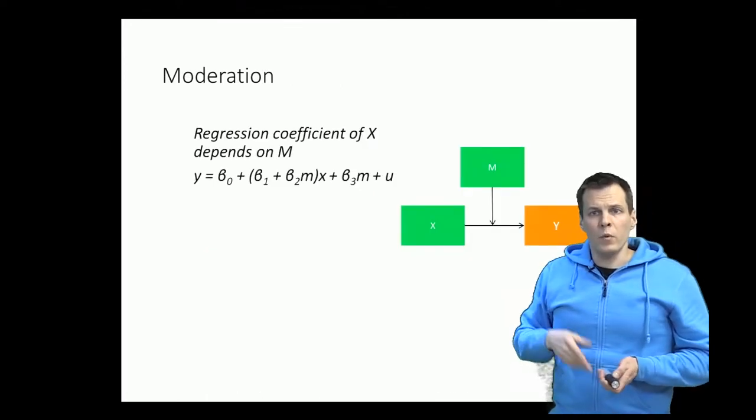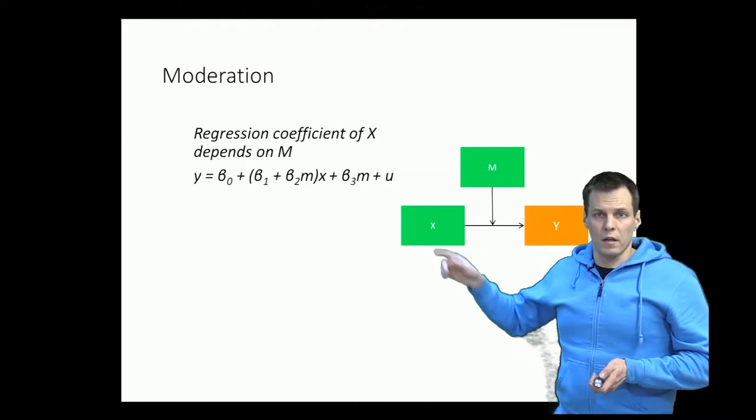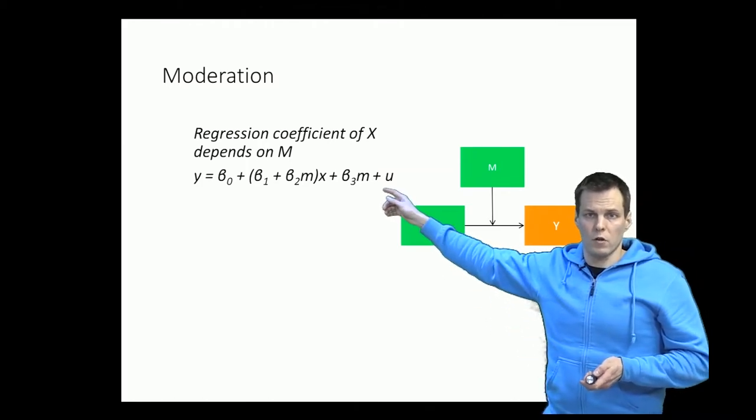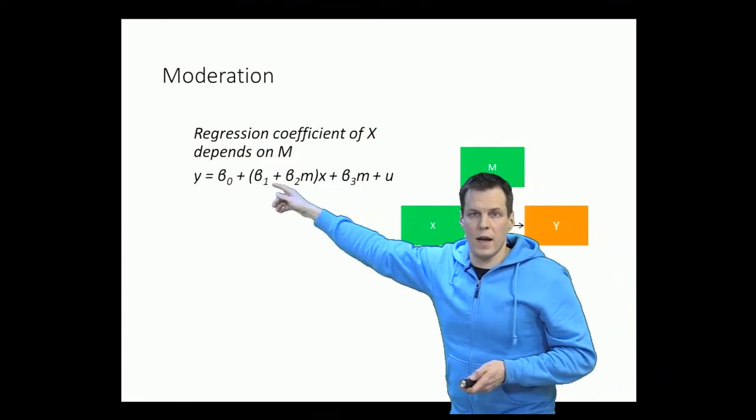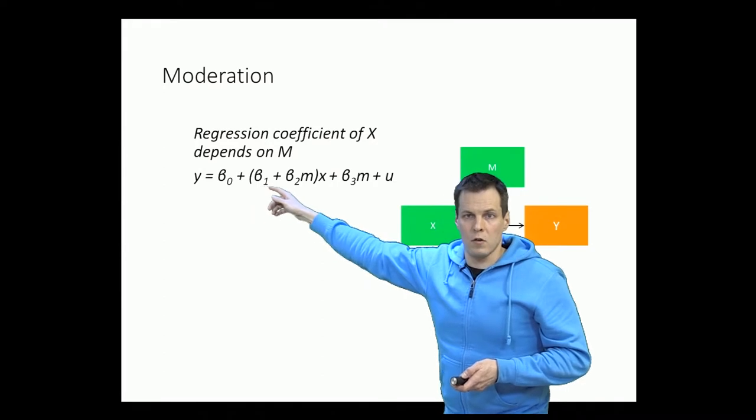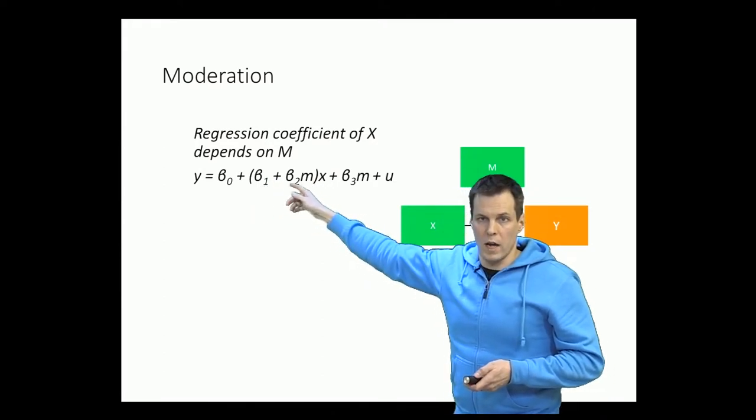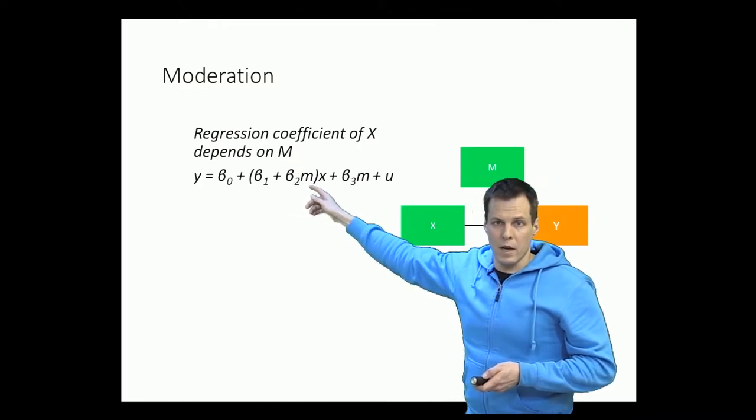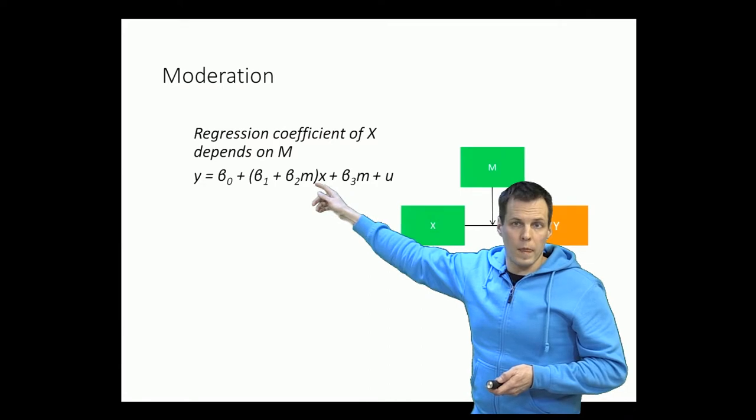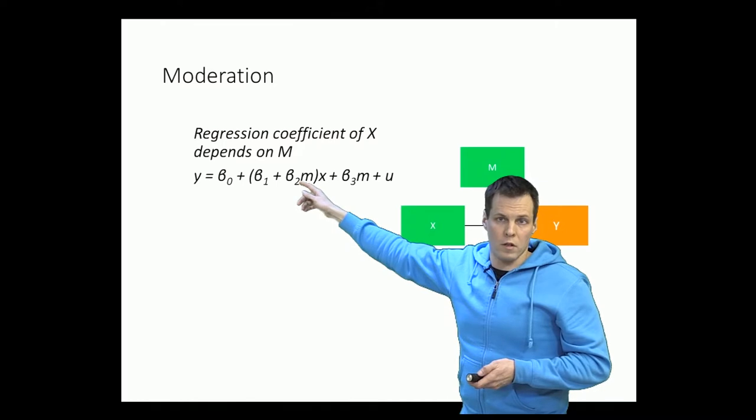How we estimate this kind of models can be understood by writing the model in this kind of form. So we're saying here that the effect of x has some base value beta 1, and then it depends also on the value of m. So it's beta 1 plus beta 2 m. If beta 2 is a large number, then it means that the m has a strong moderating effect. If it's a value that is close to zero, then there is no moderation effect.